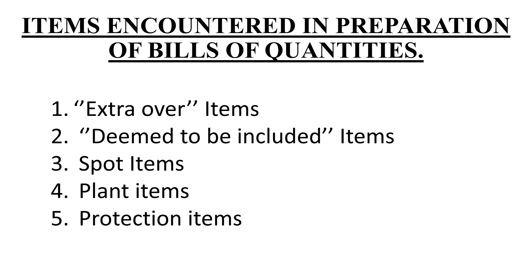So, what are the items that we usually encounter in a bill of quantity? One, we have the extra over item. Two, deemed to be included items, spot items, plant items, and protection items. We shall go through each one of these items.